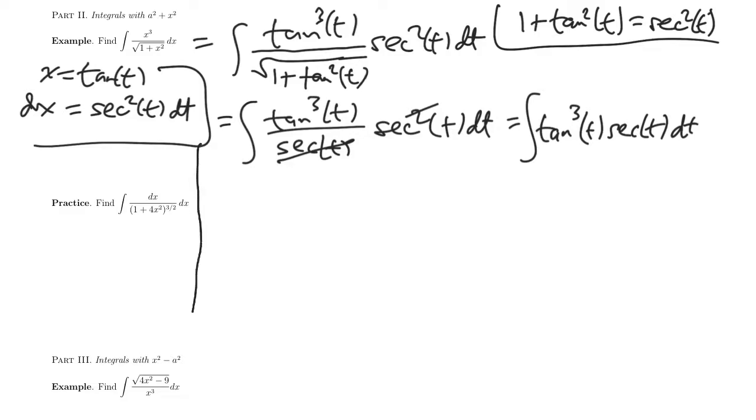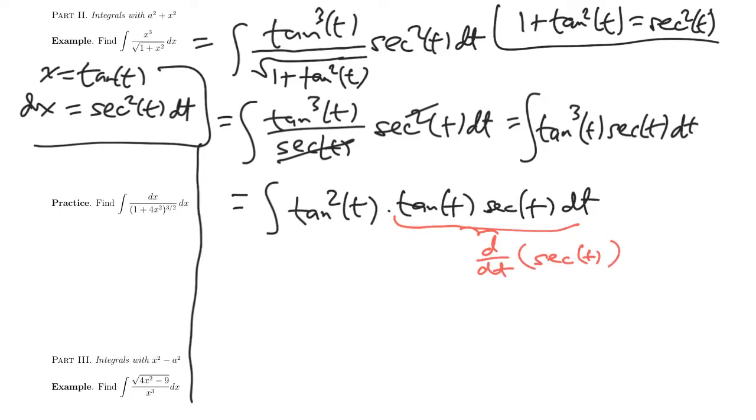Then we can rewrite this as tangent squared t times tangent t secant t dt. And the reason I do that is because all of this stuff, this is the derivative of secant of t. So if I can make the substitution u equals secant t, then du will be exactly this. And the reason that the substitution u equals secant t will work is because this part, I can write this part in terms of secant, again, because of this identity that I have up here.